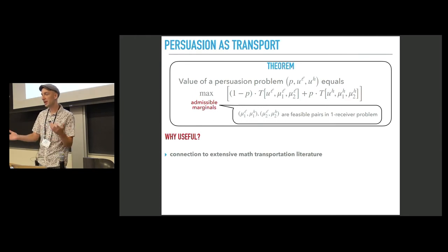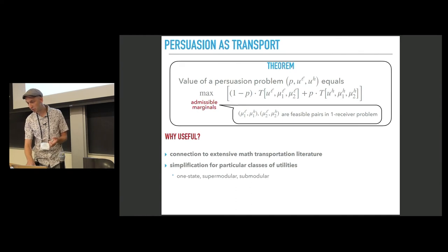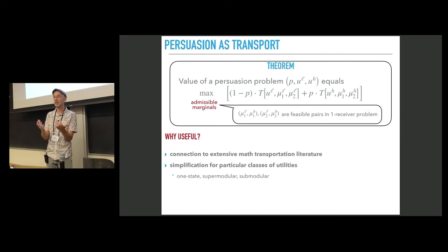So why is this useful? First of all, it enables mathematical tools from transportation literature. It's a very well-developed literature with multiple tools. Using these tools in the paper, we show that this representation simplifies for some particular classes of utilities. Under some extra assumptions, you can even get explicit solutions.